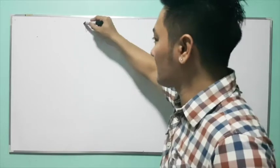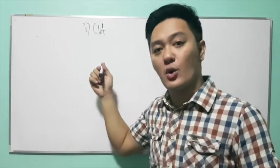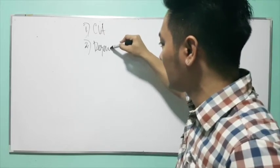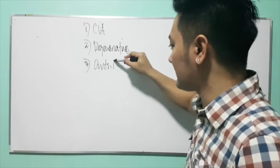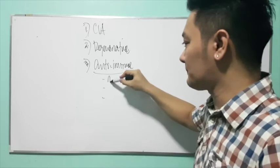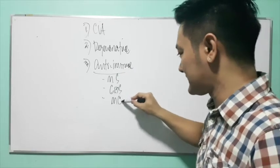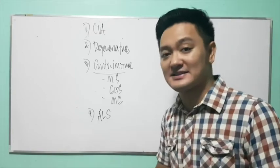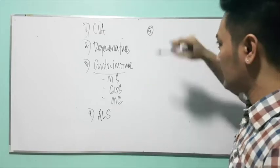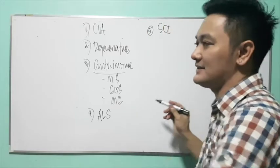Please remember that if there is an increase in intracranial pressure, a procedure like lumbar puncture or spinal tapping is contraindicated — as mentioned in previous videos. Now, for our outline of neurologic disturbances going forward: we will discuss cerebrovascular accident (stroke), degenerative disorders such as Parkinson's disease, autoimmune disorders including multiple sclerosis, Guillain-Barré syndrome, and myasthenia gravis, amyotrophic lateral sclerosis (ALS or Lou Gehrig's disease), and spinal cord injury.